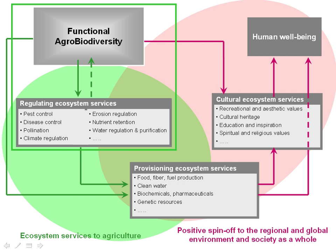The green area in the diagram highlights the core focus of the European Learning Network. The red area highlights positive spin-off of functional agrobiodiversity to the local and global environment and society as a whole. The graph is adapted from the Millennium Ecosystem Assessment, 2005. Supporting services are not included as they are not directly used by the people.